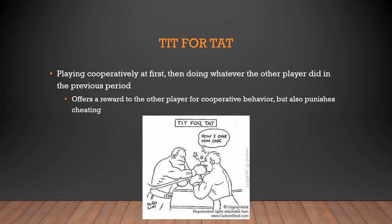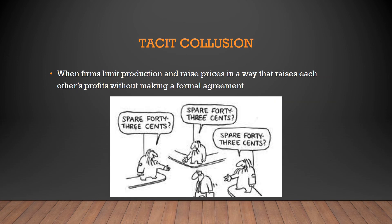We have two strategies to discuss. One is tit-for-tat: you play cooperatively at first and then you do whatever the other person did in the previous round. If they cooperate, you keep cooperating; but if they cheat, then you cheat. That's known as tit-for-tat and is usually thought of as the best strategy in multi-shot games. There's also tacit collusion, where firms limit their production and raise prices in a way that raises each other's profits without making a formal agreement — it's unspoken. A gas station can do this by putting their prices up and letting others just follow.